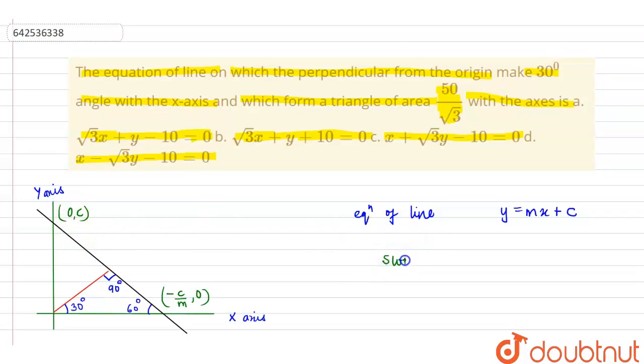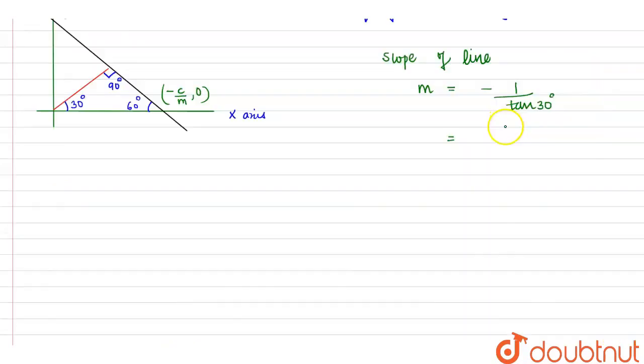Now, the slope of this line would be m equals minus 1 upon tan 30, because we are given that this perpendicular makes 30 degree angle with the x-axis. This will become m equals minus root 3.